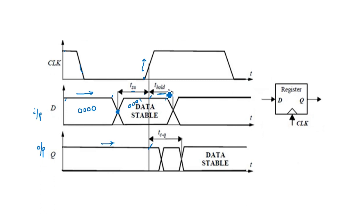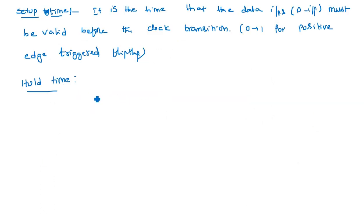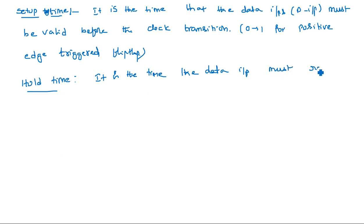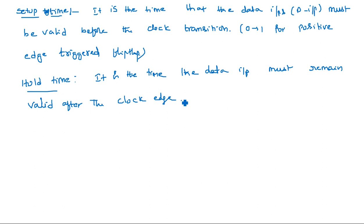Hold time is defined as the time that the data input must remain valid after the clock edge. Even after the clock signal changes from 0 to 1, the data that was valid during setup time must be maintained for some duration — that duration is known as hold time.